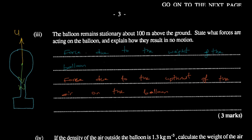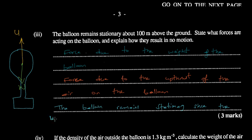Since there is no motion, the balloon is neither going up nor going down. The balloon remains stationary because the upthrust — the upward force — is equal to the weight of the balloon. When this occurs, the net force is zero, and if the net force is zero, we get no motion.